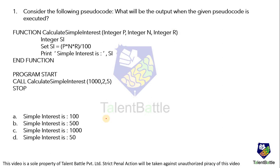The first question is a pseudo code question. Consider the following pseudo code and determine what the output will be when it is executed. Pseudo code, as we know, is dummy code that helps us understand programming logic only. So if you are able to figure out the flow of the program from the provided pseudo code, then we can easily figure out the output.